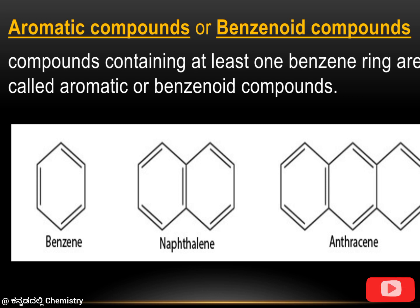Aromatic compounds are also called benzenoid compounds. The ring is present with double bonds, and at least one benzene ring will be present. These are called aromatic or benzenoid compounds.